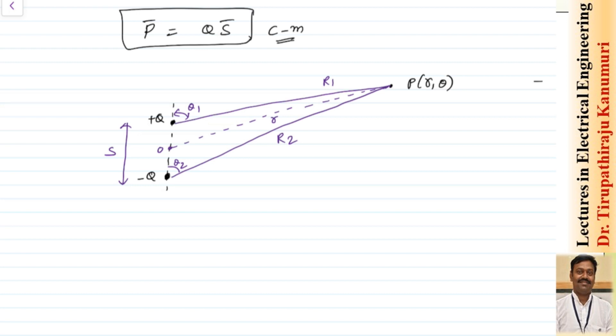From this point I can draw a perpendicular. When you draw a perpendicular, let us assume this angle is equal to theta. If you want to calculate this perpendicular, it will be projected here. Because this distance is S by 2, this distance is also S by 2.